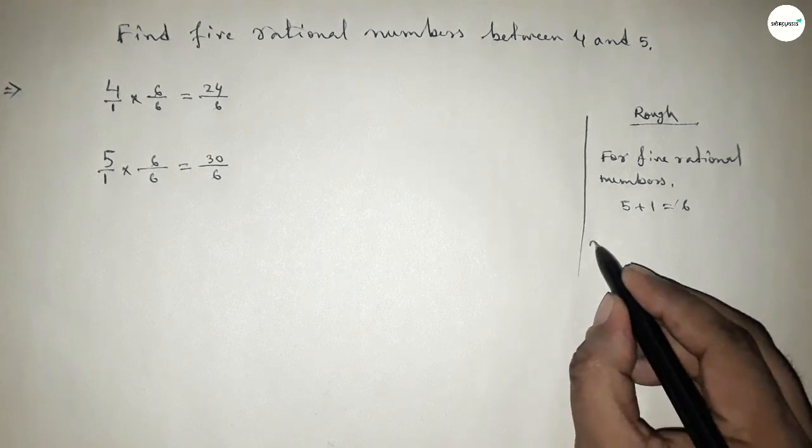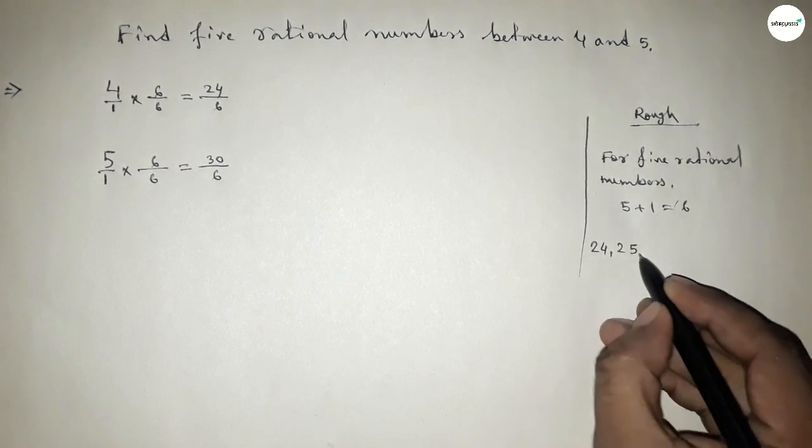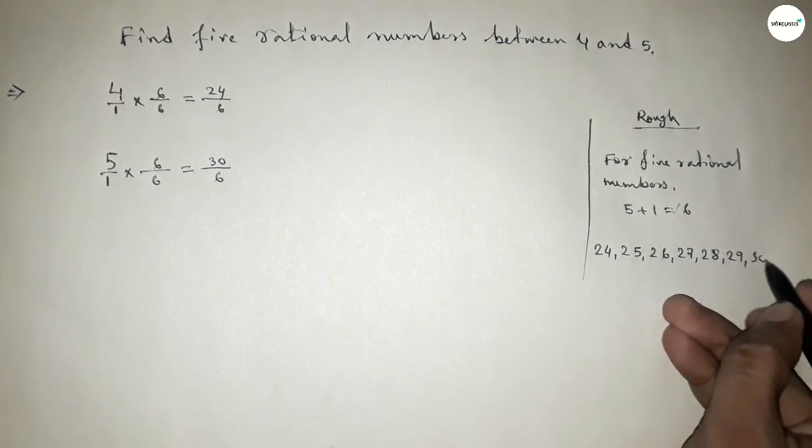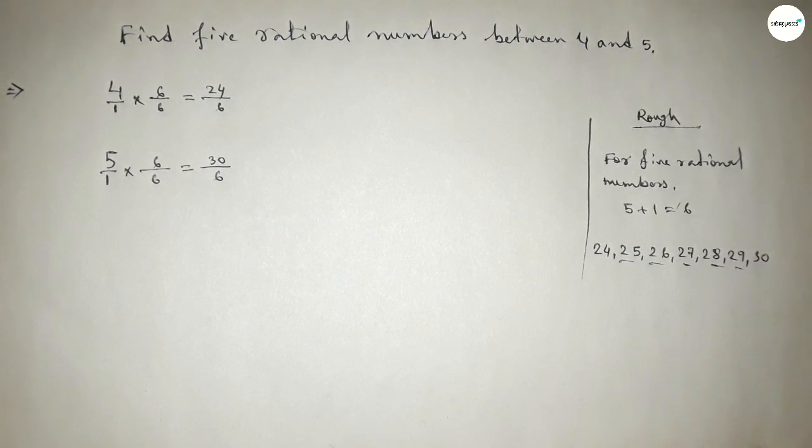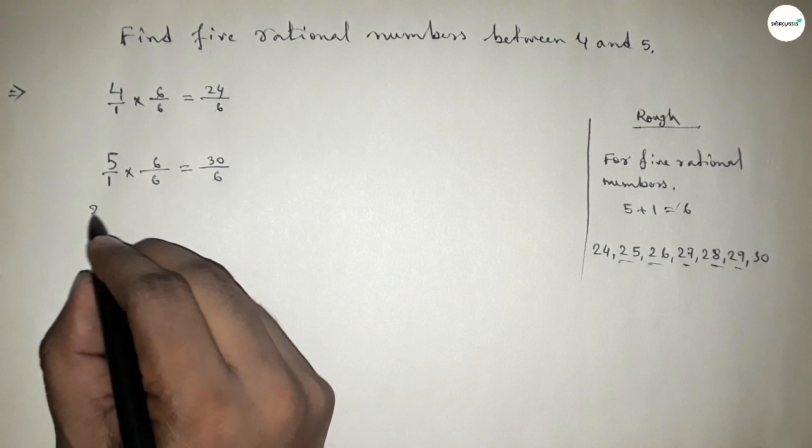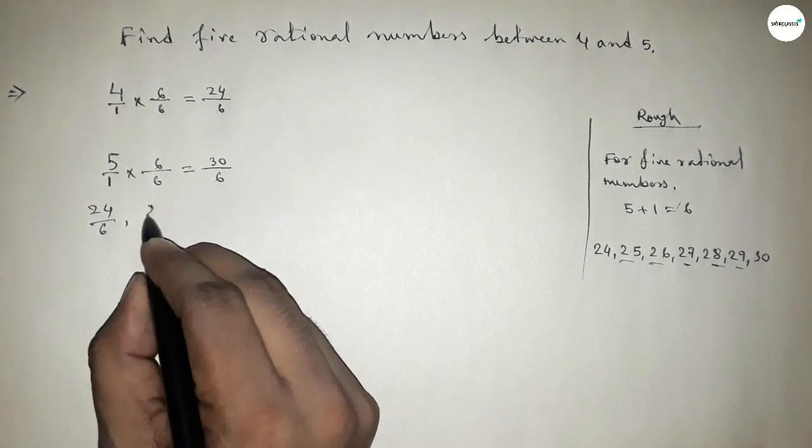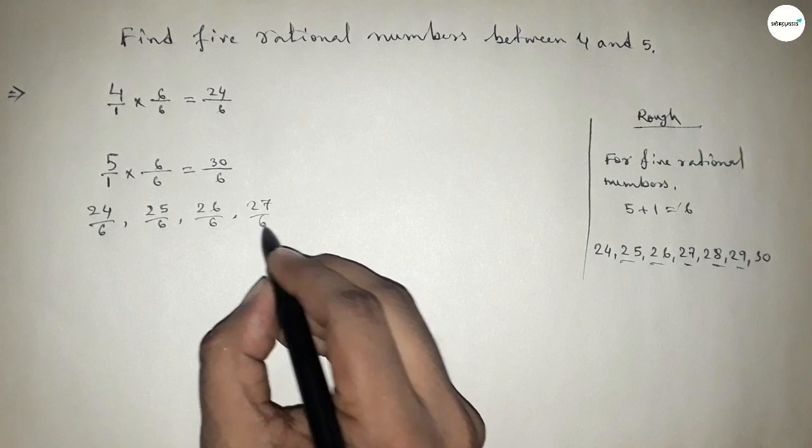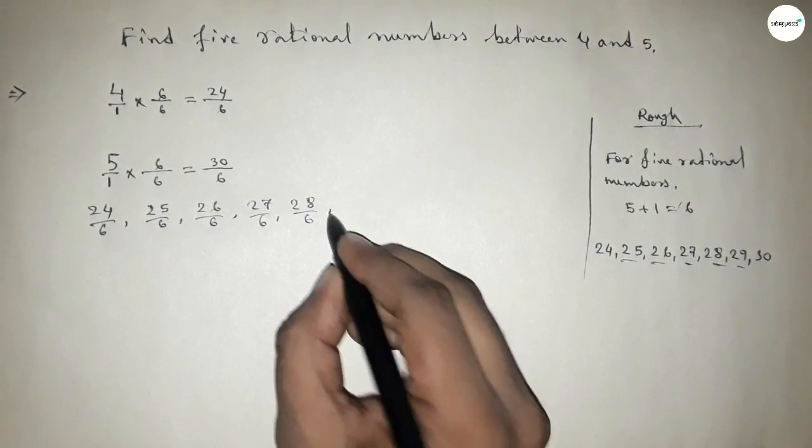Now between 24 and 30 we can find five rational numbers. So here: 24/6, 25/6, 26/6, 27/6, 28/6, 29/6, and 30/6.